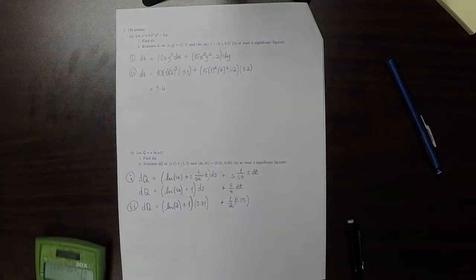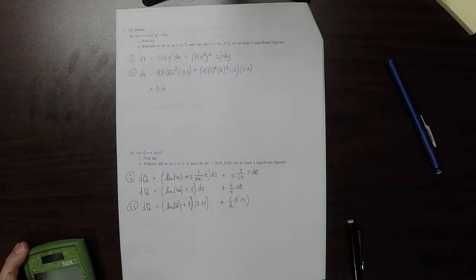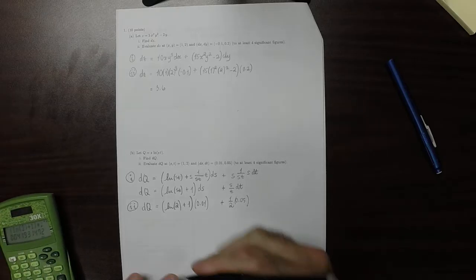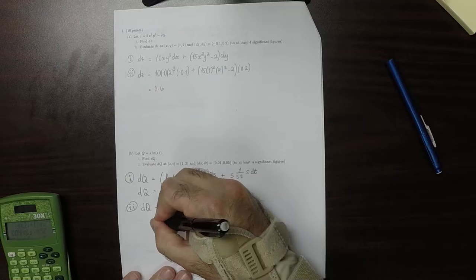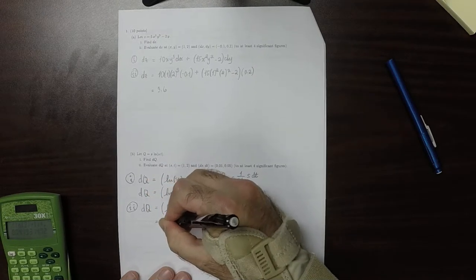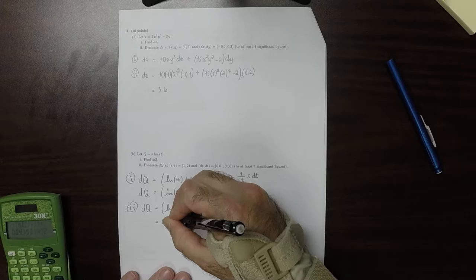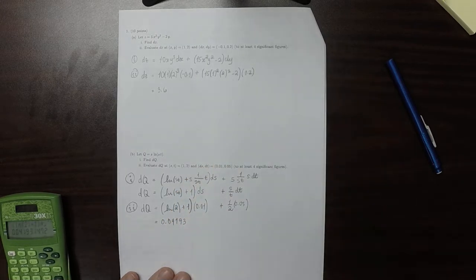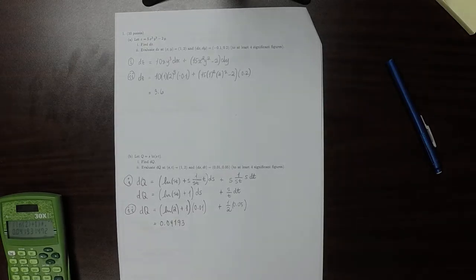OK, then plugging that into the machine, that'd be log 2 plus 1 times 0.01, plus half times 0.05. And the calculator is reading 0.04193, to four significant figures.